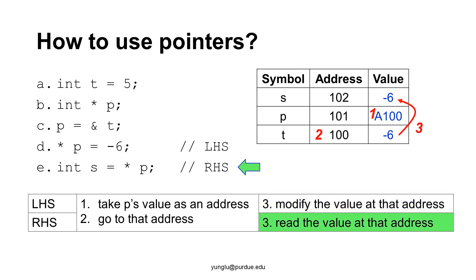Next, let's consider line E. In this case, the asterisk is at the right-hand side of the equal sign. The first two steps are the same: the first step takes p's value as an address — the value is 100 — and the second step goes to that address. The third step reads the value from that address. The value of t is -6. Thus, line E assigns -6 to the variable 'as'.